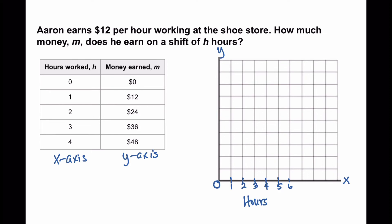Now the y-axis is going to represent the amount of money that Aaron is going to earn based on the number of hours that he has worked. So we will start at zero, but we're going to count by 12. So it would be zero, then 12, then 24, 36, 48, 60, 72. And I'm going to stop there. Now we're going to label this side money.